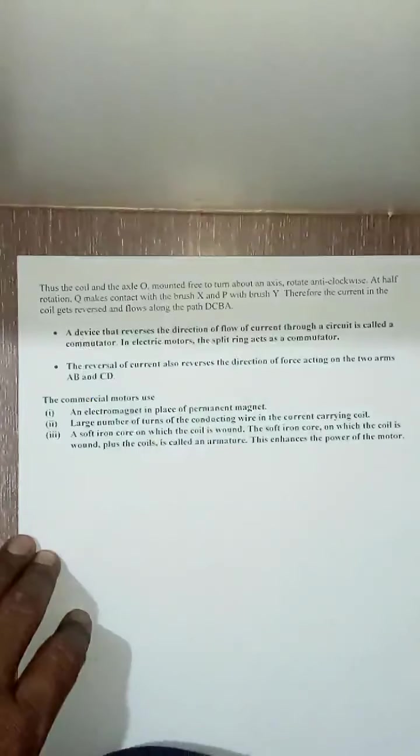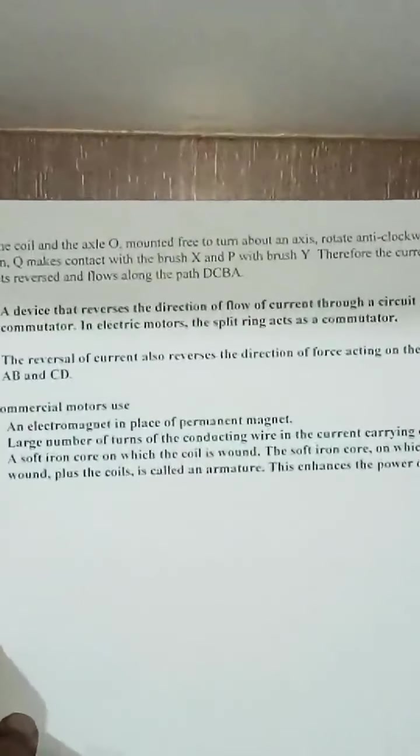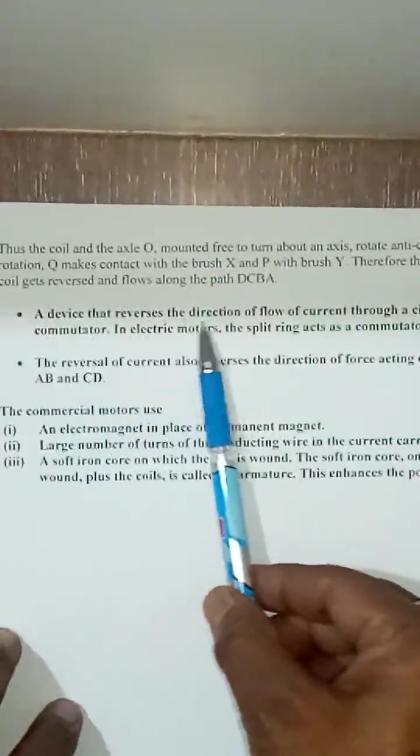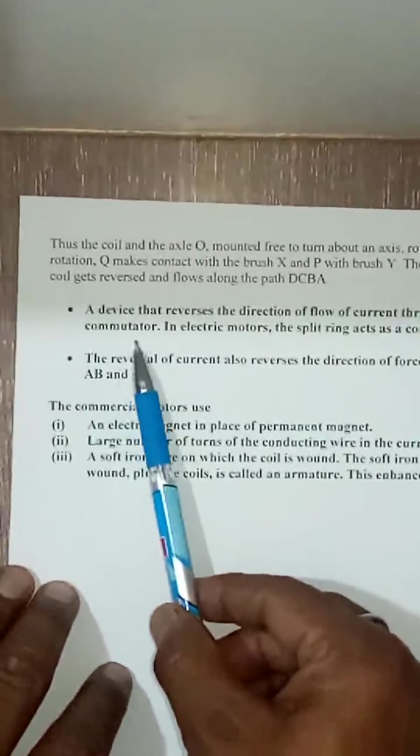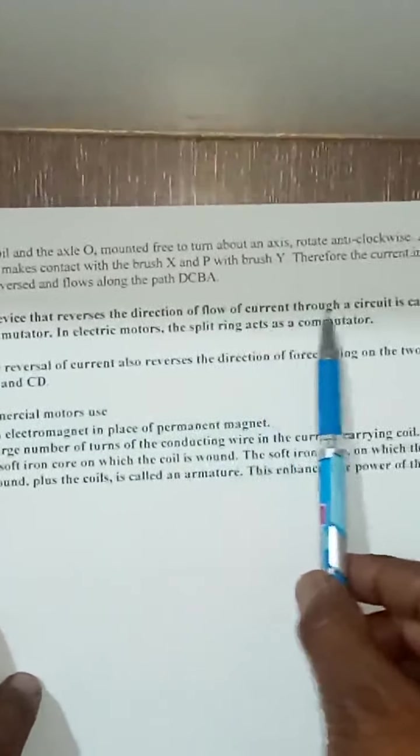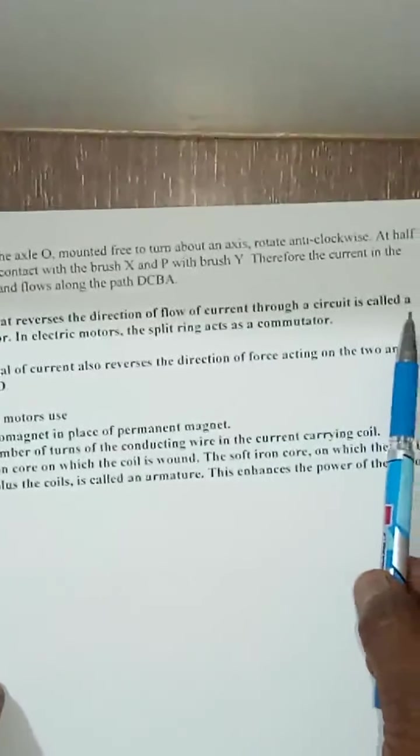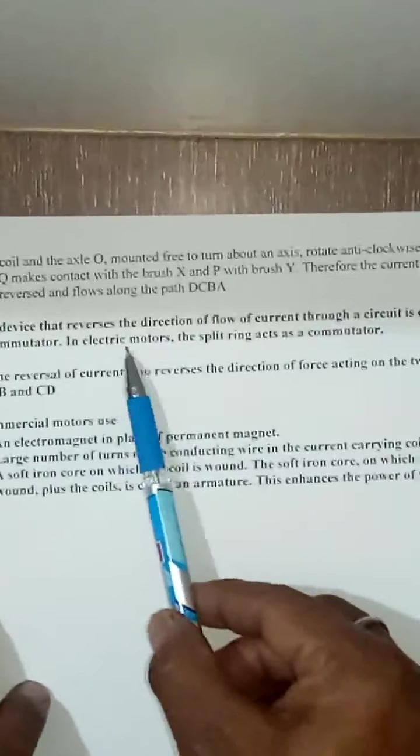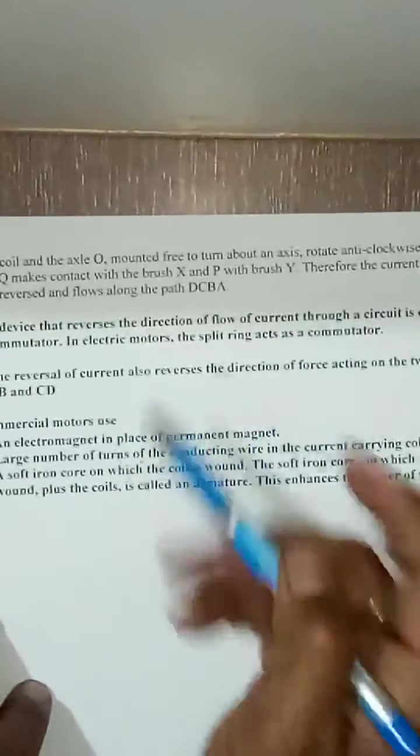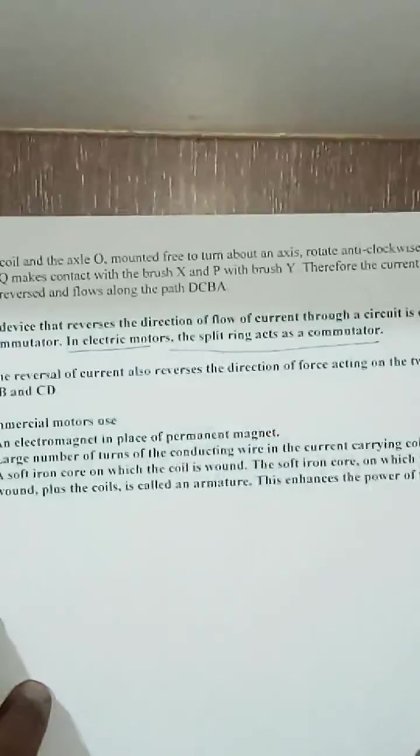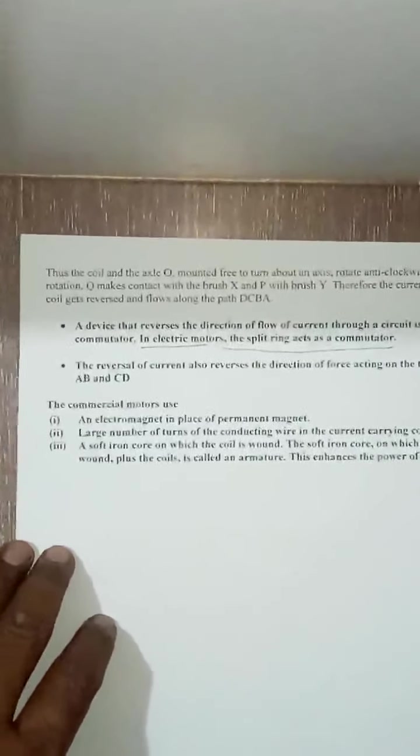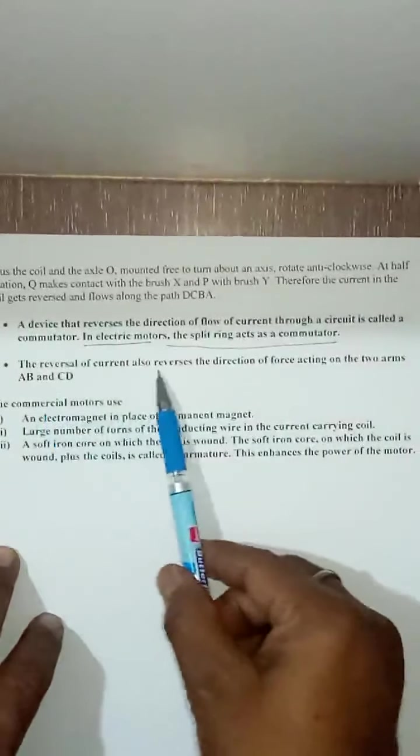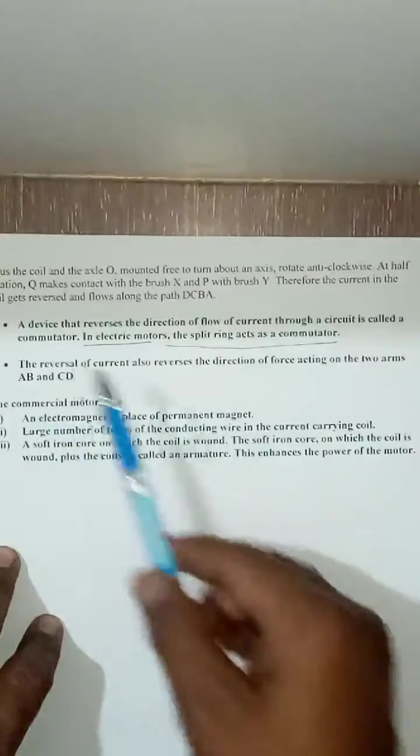The important thing to be noted here: this is what a device that reverses the direction of flow of current through a circuit is called a commutator. A commutator. This question comes in examination. What is commutator? A device that reverses the direction of flow of current through a circuit is called a commutator. In electric motors, the split ring acts as a commutator.